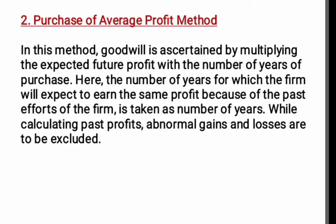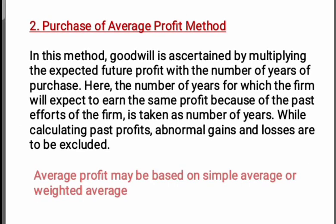While calculating past profit, abnormal gains and losses are to be excluded. We call this the adjusted average profit. So goodwill equals the expected future average profit multiplied by the number of years of purchase. Abnormal gains or losses are excluded from the past profit figures before calculating the average.